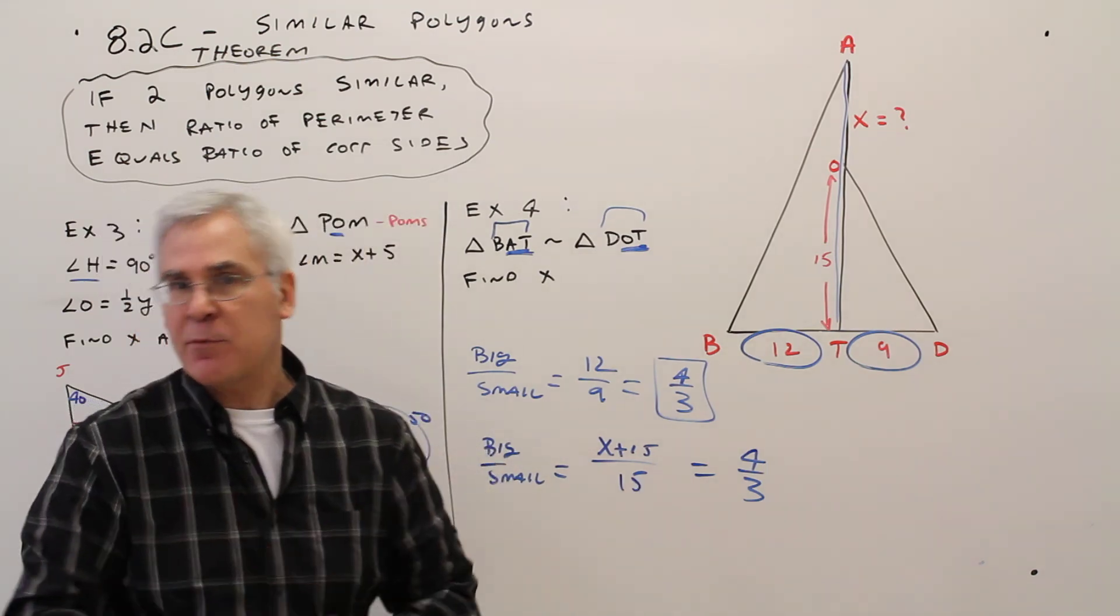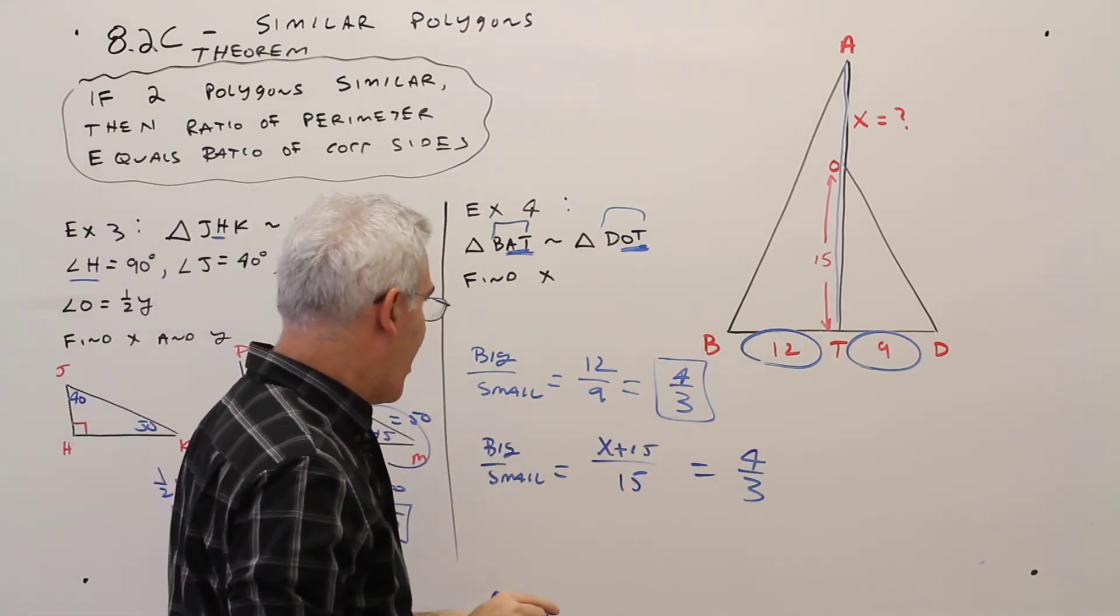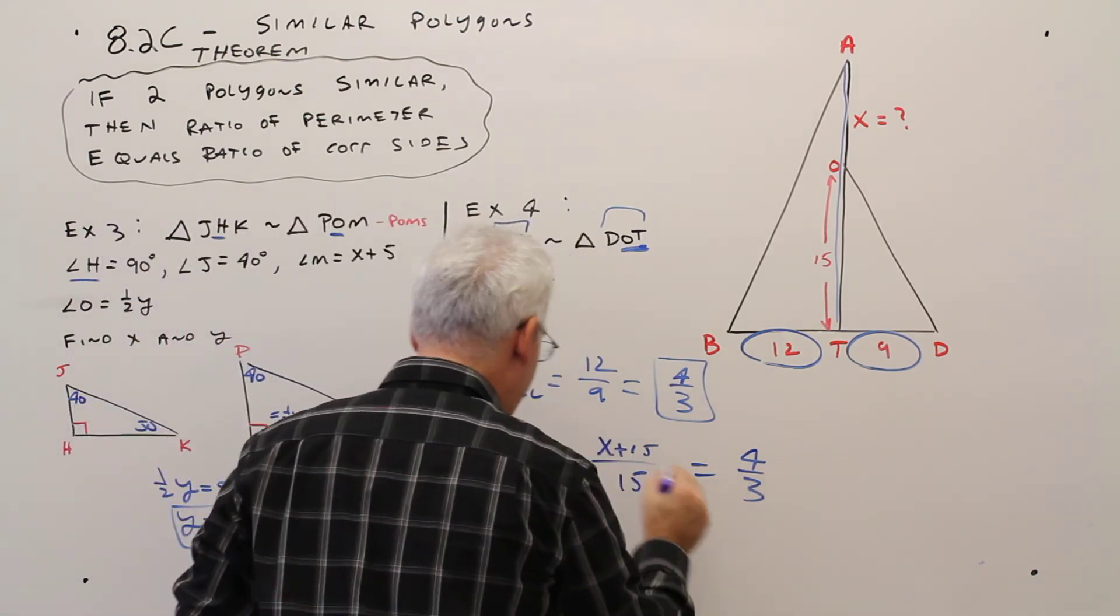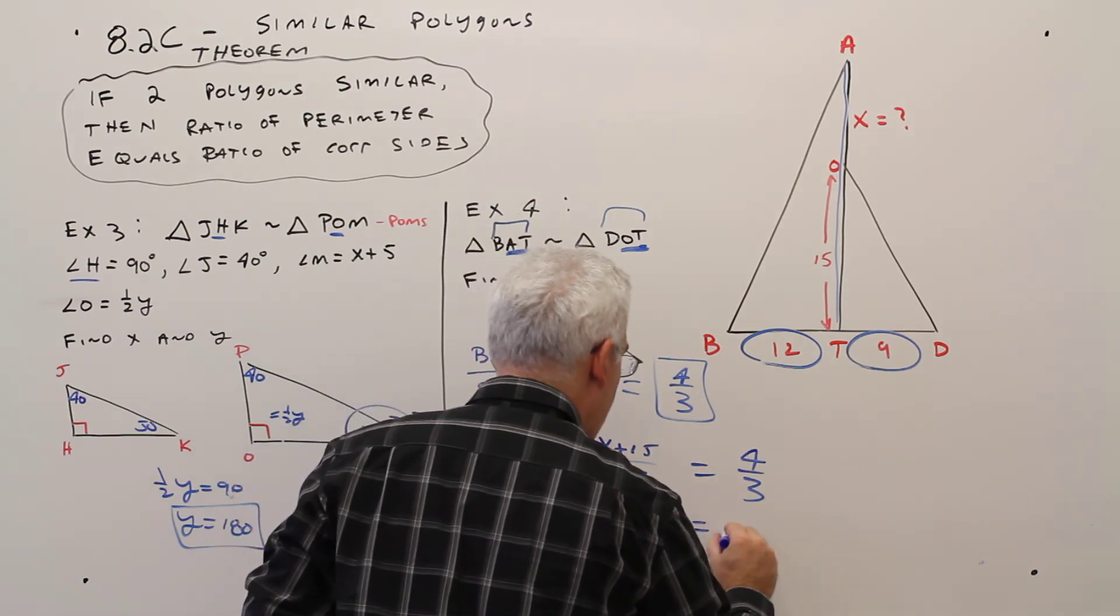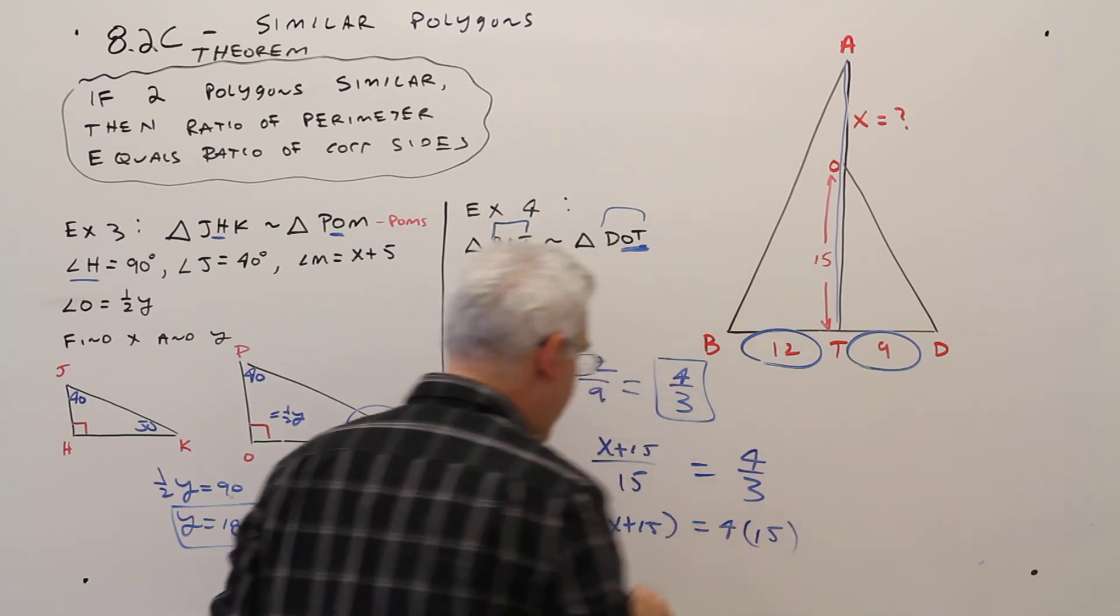Now it's just a matter of cross-multiplying and distributing properly. Alright, so I'll cross-multiply. 3 times X plus 15 equals 4 times 15.